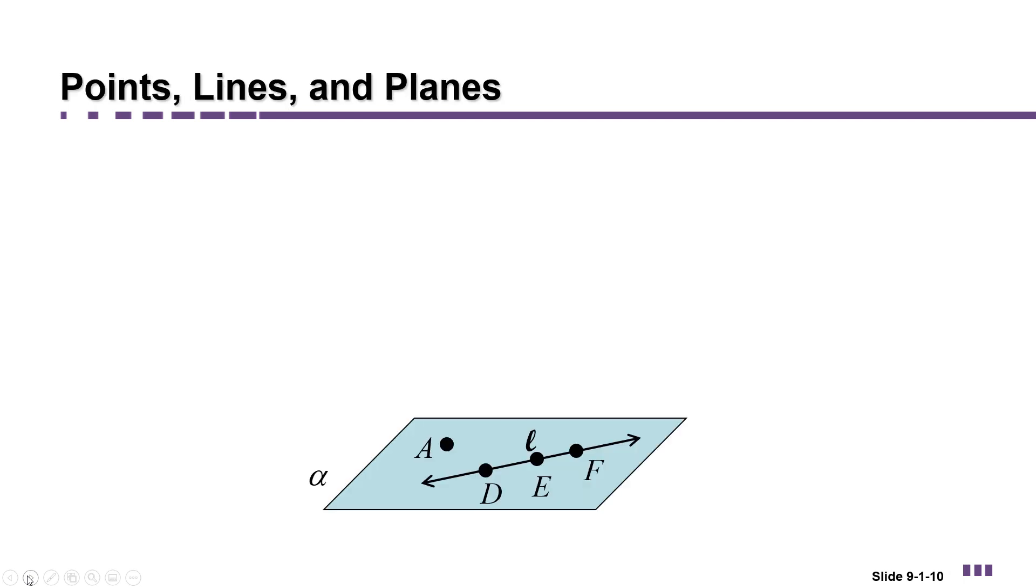In this diagram, we see points, a line, and a plane. A capital letter usually represents a point, so you see that the points on this diagram have been labeled with the capital letters A, D, E, and F.